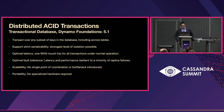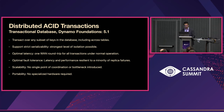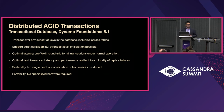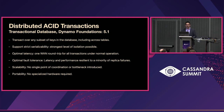Distributed ACID transactions are our next focus. Some of the design goals we've established: users should be able to transact over any subset of keys in the database, including across tables. Cassandra should support strict serializability, the strongest level of isolation possible. We want to achieve optimal latency — one WAN round trip for all transactions under normal operation. We also want optimal fault tolerance: latency and performance must be resilient to a minority of replica failures. In terms of scalability, we don't want a single point of coordination or bottleneck introduced. We also value portability as an open source project — no specialized hardware should be required. All of these sound like the capabilities Dynamo was built around.